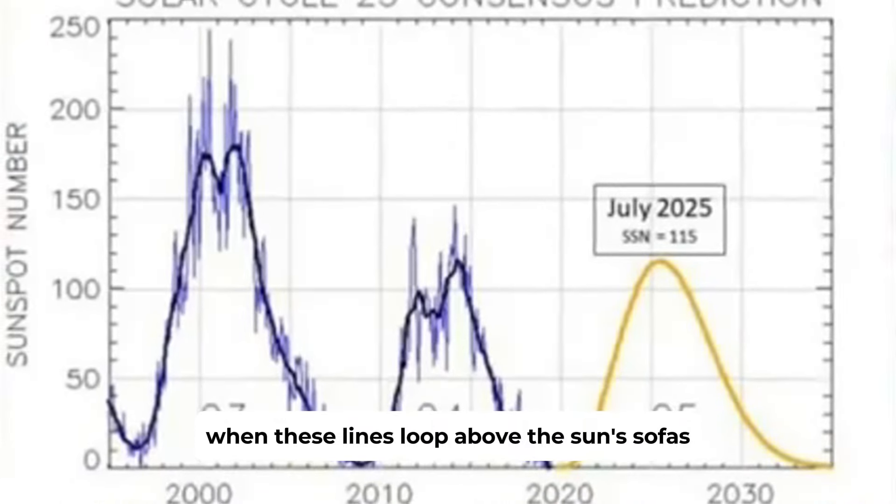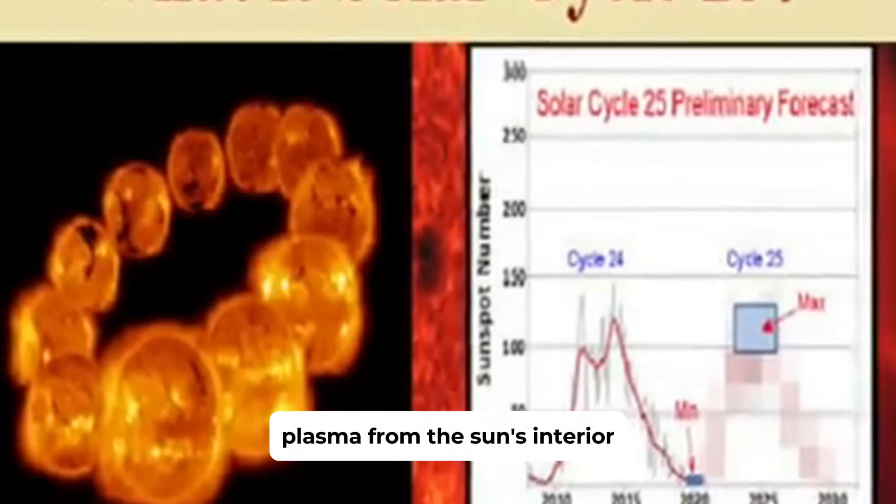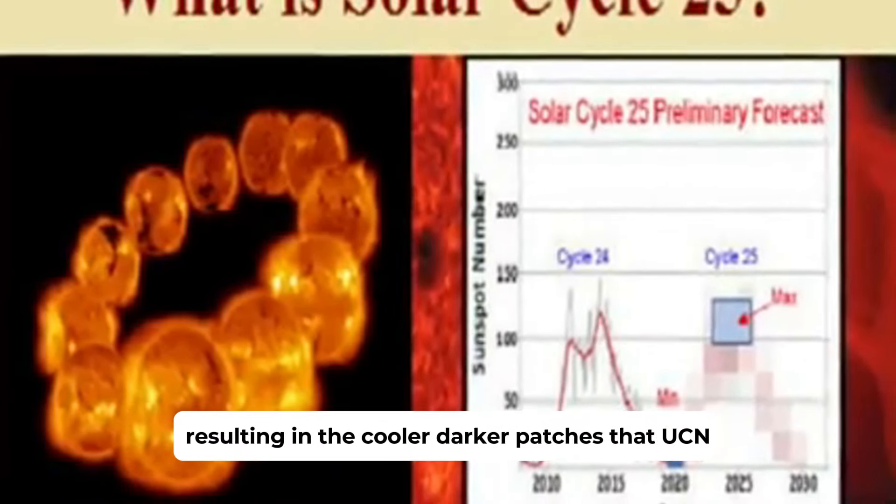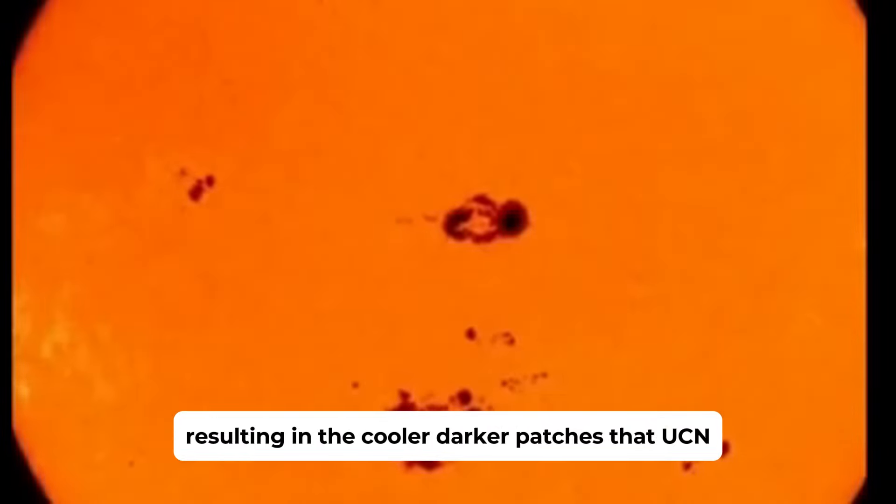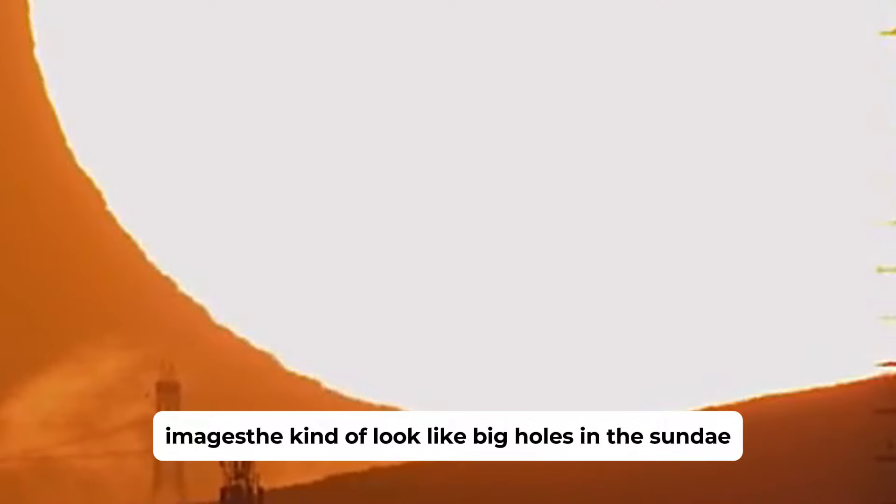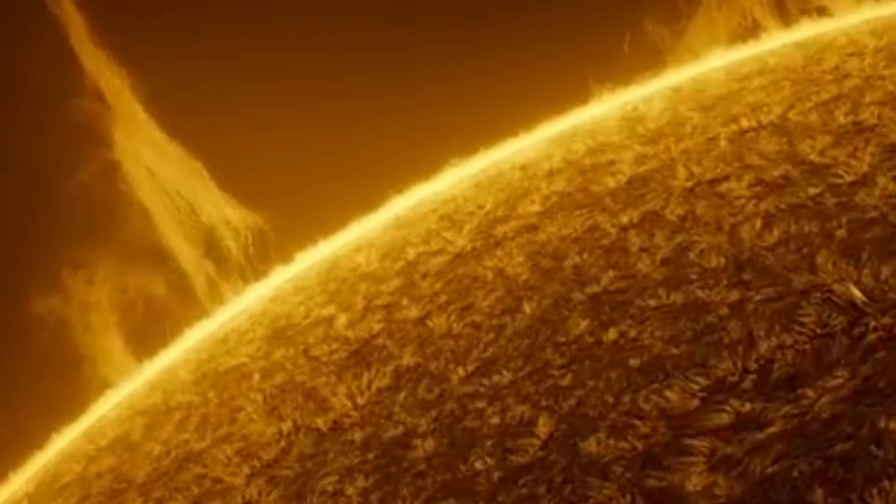When these lines loop above the Sun's surface, they inhibit the convective flow of hot plasma from the Sun's interior, resulting in the cooler, darker patches that you see in sunspot images. They kind of look like big holes in the sun today.